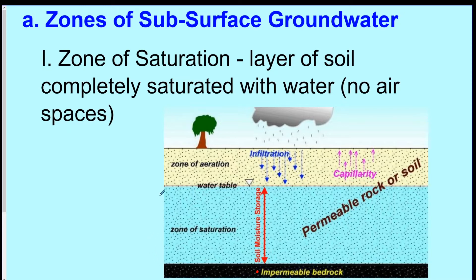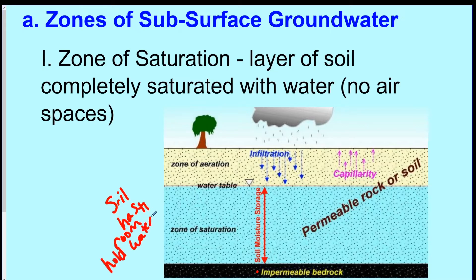Impermeable bedrock means the rock is not able to soak up anything — impermeable means there are pretty much no holes in the rock, it's solid. As opposed to that, the zone of saturation has soil with room to hold water. The water seeps into the ground and fills up to a certain line, and the top of that water area is called the water table.